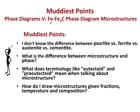Hello, today's screencast is Phase Diagram Part 5: Iron Iron Carbide Phase Diagram Microstructures. In this screencast, we will be covering the following muddiest points: I don't know the difference between pearlite, ferrite, austenite, and cementite.